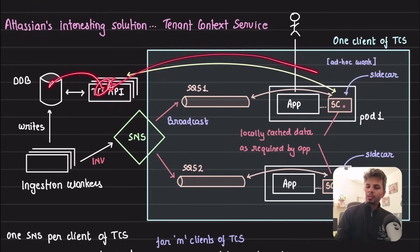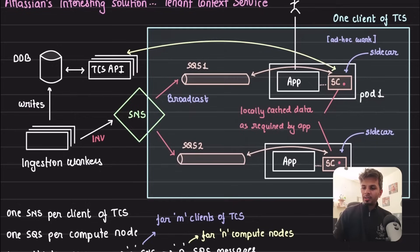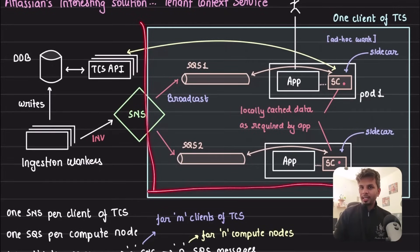The API server goes to the database, reads the data, and serves it. So whoever wants to consume the TCS data, this is the flow. Now the core idea or the core pain point of cache invalidation happens when your ingestion workers are doing writes onto the DynamoDB. The source of truth has changed and this change needs to be percolated to the clients of TCS service.